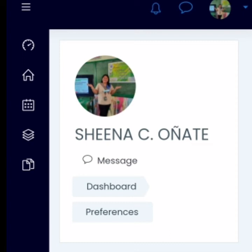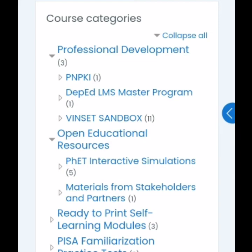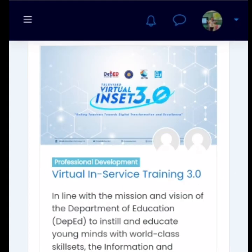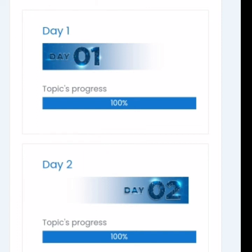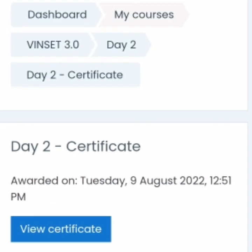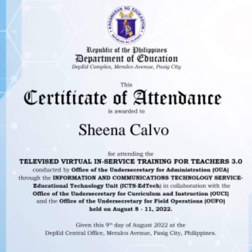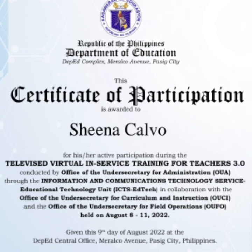So let's find our courses. Let's go to professional development and select the virtual in-service training 3.0. Our target here mga mams and sirs is to have our certificate with our married name. Just like in my case, I viewed my certificate and the one I got earlier still had my single name status. So I want to change it to my married name — that's our goal today. Let's go to our day 2 certificate, click 'view certificate', and check whether our name has been updated. Here are my certificate of attendance and certificate of participation from my first attempt at viewing these certificates.